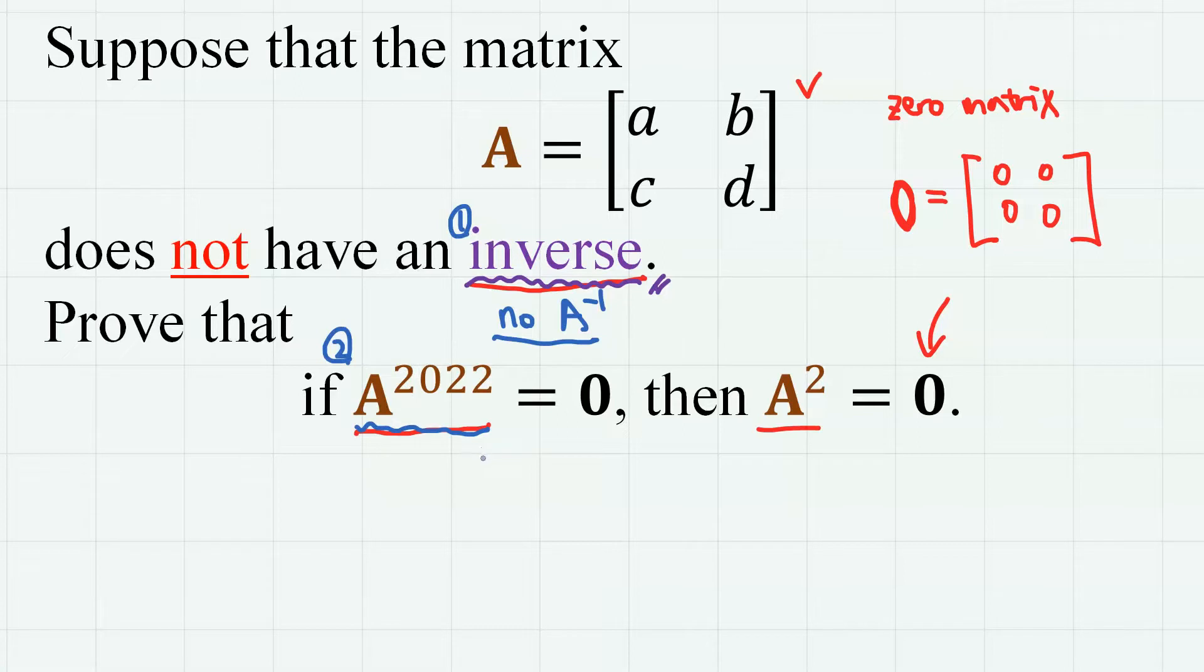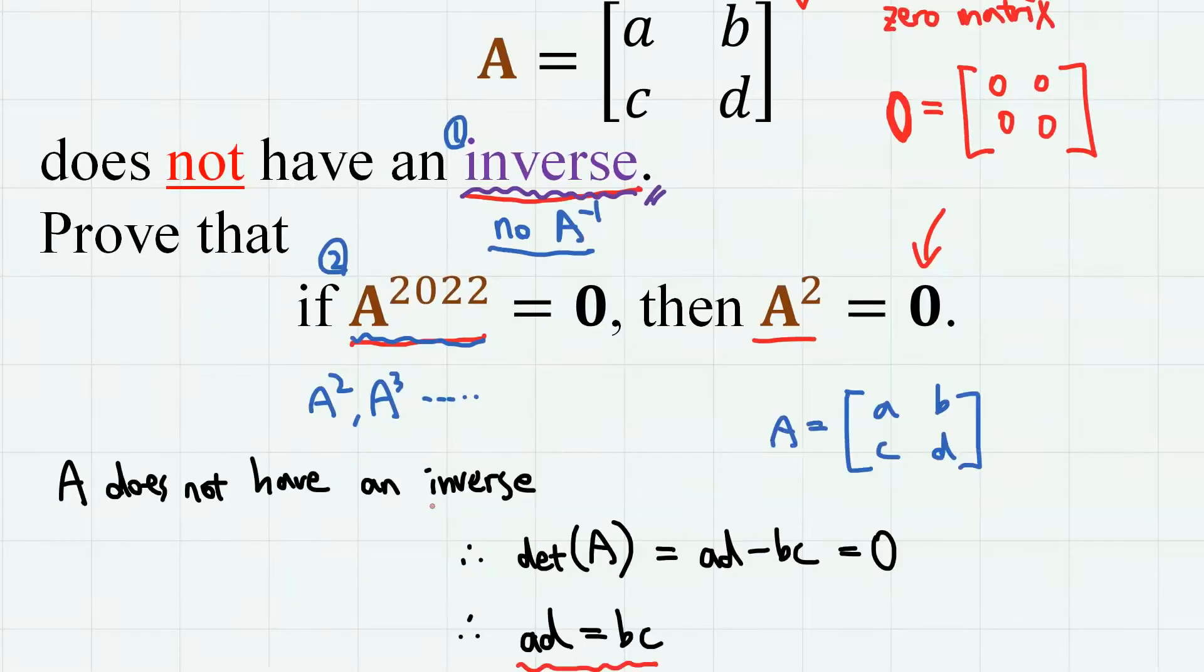since we have the matrix to the power of large number here, we have to find a pattern to obtain general expression for the matrices like A squared, A cubed, and etc. Right, first let's start from the fact that the matrix A does not have an inverse.